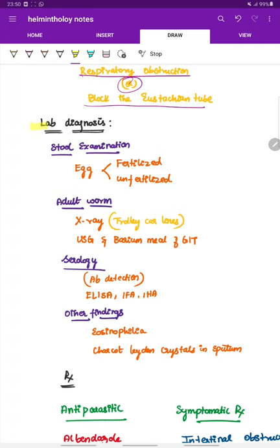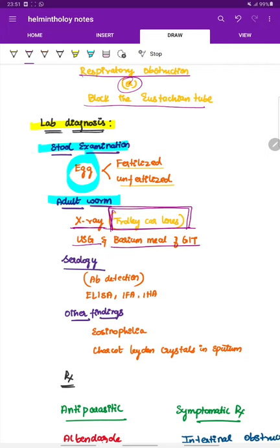Next is the lab diagnosis which includes stool examination. The stool is examined for egg and the egg can either be fertilized or unfertilized. Next is the examination for adult worm. The adult worm can be visualized in X-ray. The X-ray shows tram-track lines which is an X-ray finding. USG and barium meal of GIT can also reveal the adult worm.